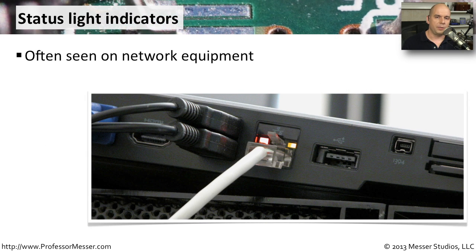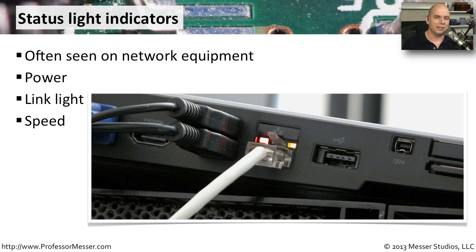Some components inside your computer will have status lights associated with them. We see this all the time with network connections — there may be a light showing status or power. Maybe it's an adapter card inside your computer with lights that tell us how that component is working. You can use those status lights to help determine if a component is working or not, but if the device goes bad and the status lights show an error or don't come on at all, that may point to bad hardware.